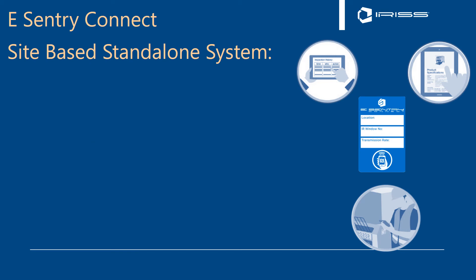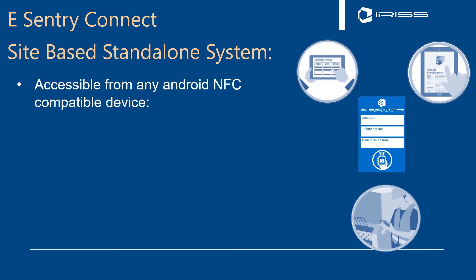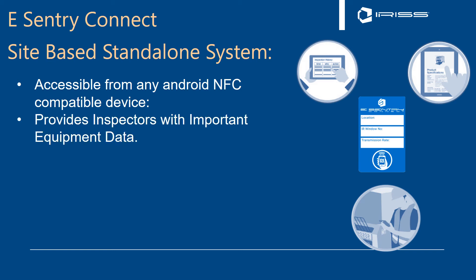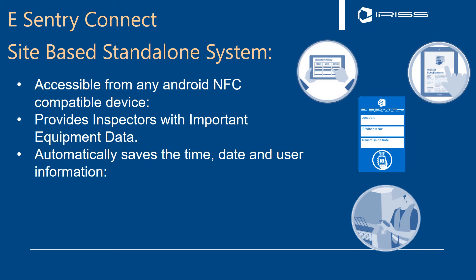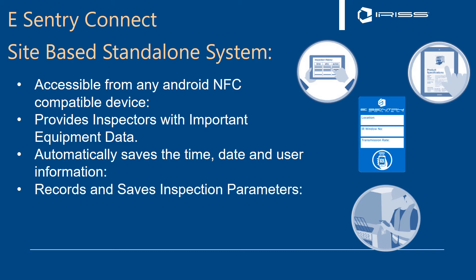The site-based standalone system is accessible from all Android NFC-compatible devices. It provides inspectors with important equipment data — when I open the tag, it tells me the targets, emissivity, and any notes. It automatically records the time, date, and user information, digitally imprinting that tagging operation to the person who opened it. It records and saves all inspection parameters, so I can open the tag, look at the last inspection date and findings — for example, it was at 82°F and there was a warm connection on phase two — and relay that to the next inspector, enabling instant historical analysis.